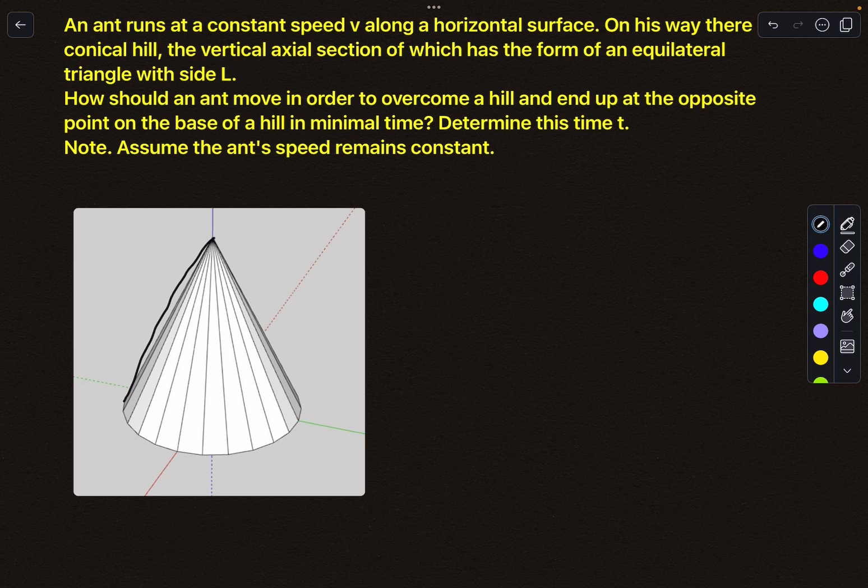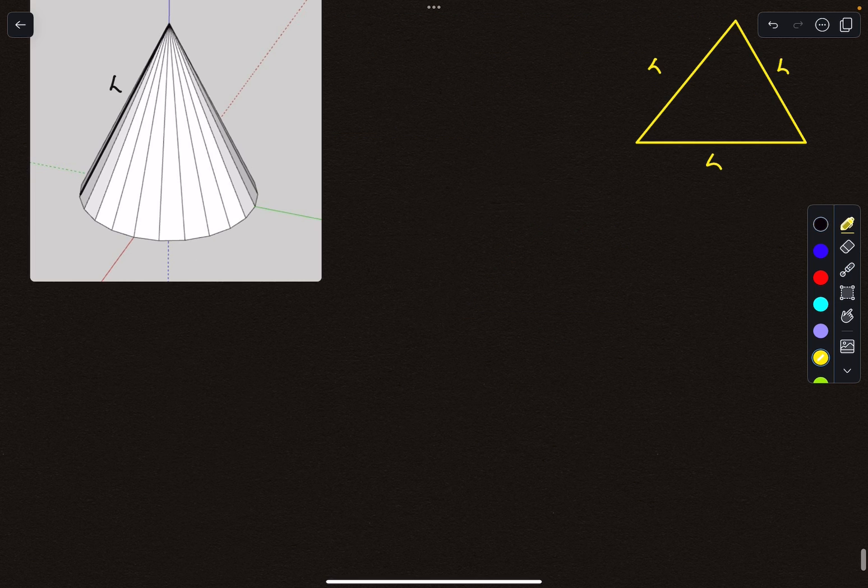So I know my slant height is L. Let's say this is the cross section of the cone. It's given that the cross section represents an equilateral triangle where each side length is L, so we can essentially say the base diameter is simply L.